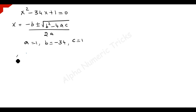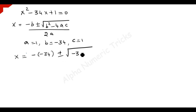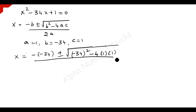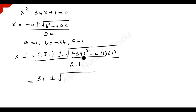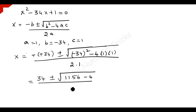Substituting the values: minus of minus 34 becomes plus 34, plus or minus square root of minus 34 squared minus 4 times 1 times 1, divided by 2 times 1. So we have 34 plus or minus square root of 1156 minus 4, divided by 2.